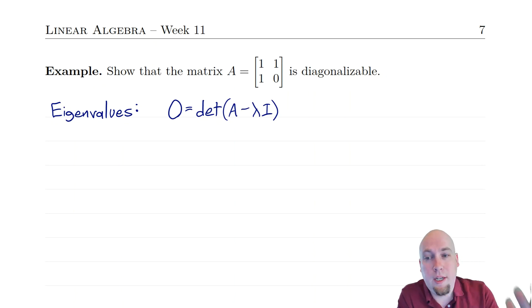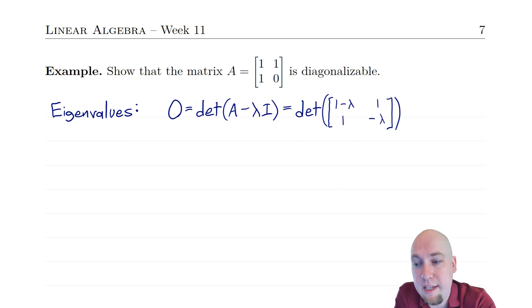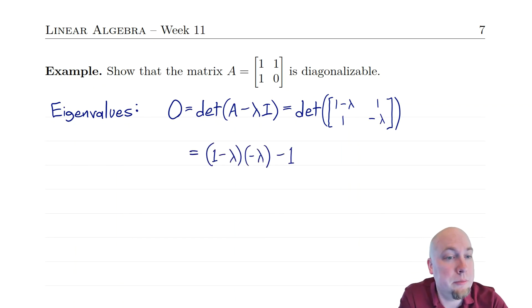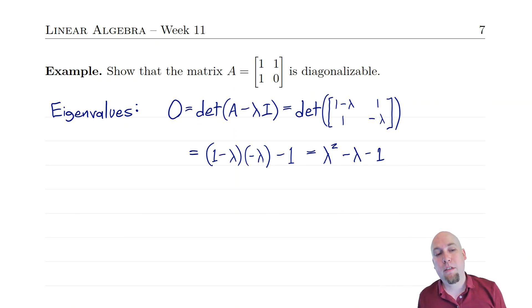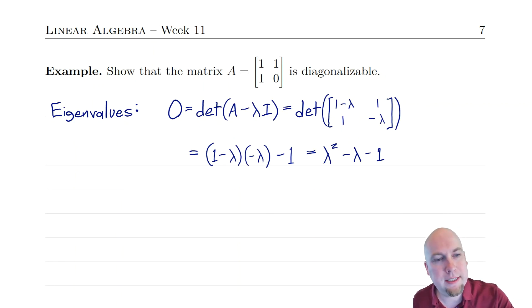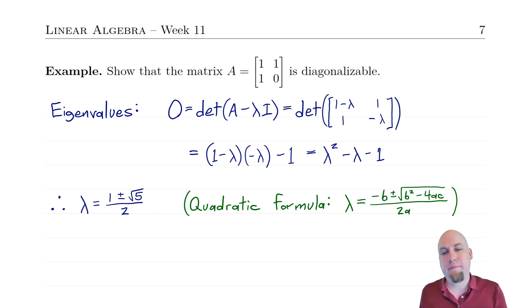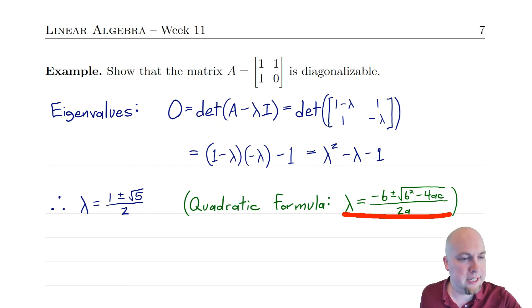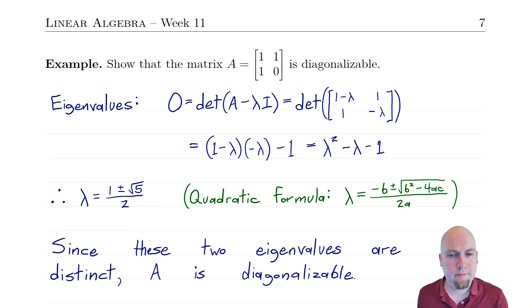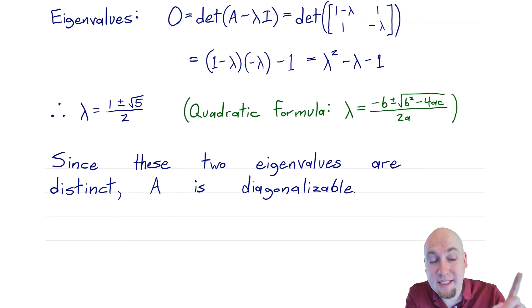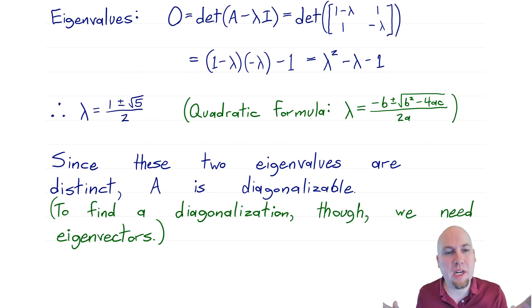To do this, you compute the eigenvalues. Set the determinant of A minus lambda I equal to zero. Computing that determinant for the 2 by 2 matrix: (1 − lambda)(−lambda) minus 1, which expands to lambda squared minus lambda minus 1. I can't factor this polynomial, but I can use the quadratic formula to find its roots — lambda equals (1 ± √5) / 2. Now we look at those eigenvalues: there are two of them, it's a 2 by 2 matrix, and those two eigenvalues are distinct. So we know right away that matrix is diagonalizable. Note that this doesn't tell us how to diagonalize it — if we actually want to do that, we do have to go one step further and find the eigenvectors corresponding to those eigenvalues.